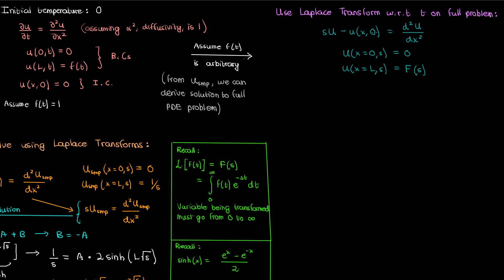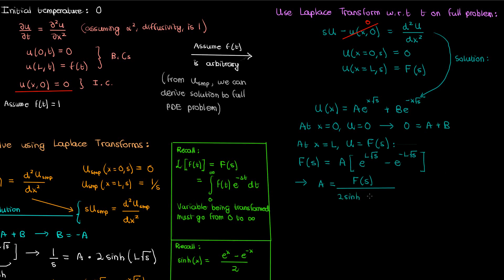Again, the initial condition is 0 so we can eliminate that, and once again the solution to the differential equation is the same sum of exponentials. We'll apply our first boundary condition at x equals 0 to find that a plus b is 0 once again. Then we'll apply our second boundary condition at x equals L to obtain the following. Converting the bracket term to a term involving the hyperbolic sine and isolating capital A gives us the following.